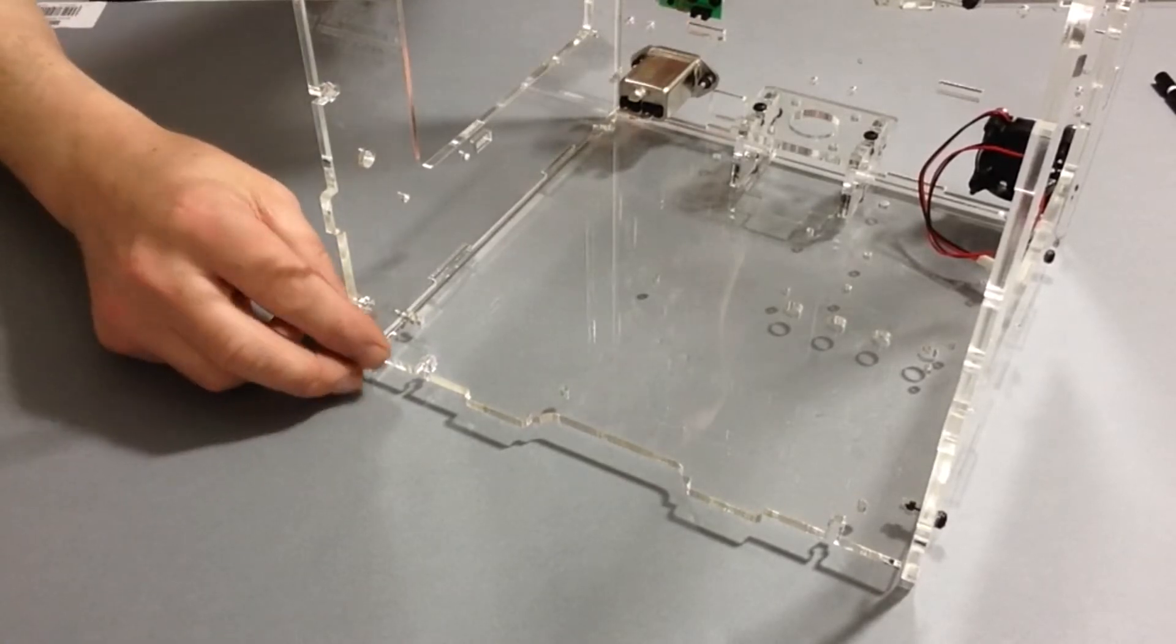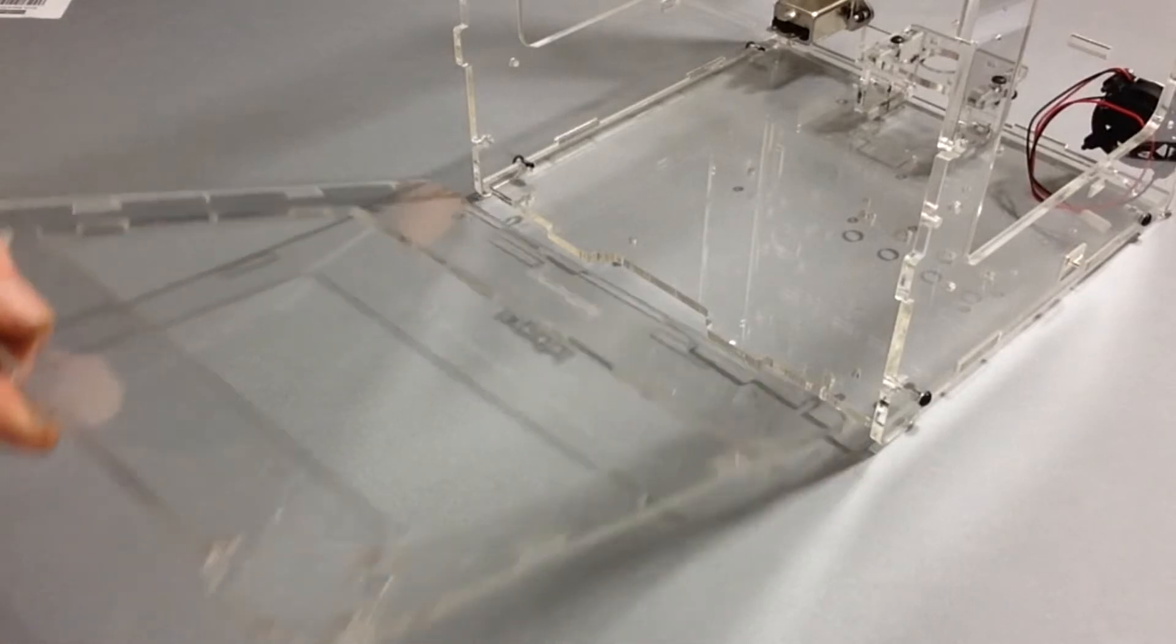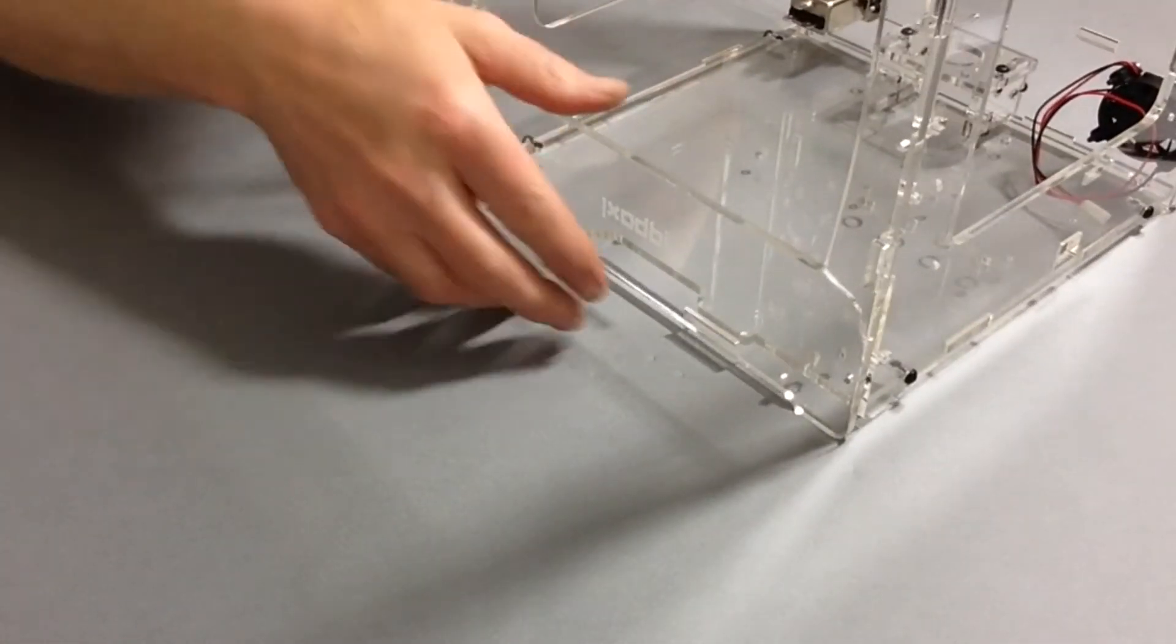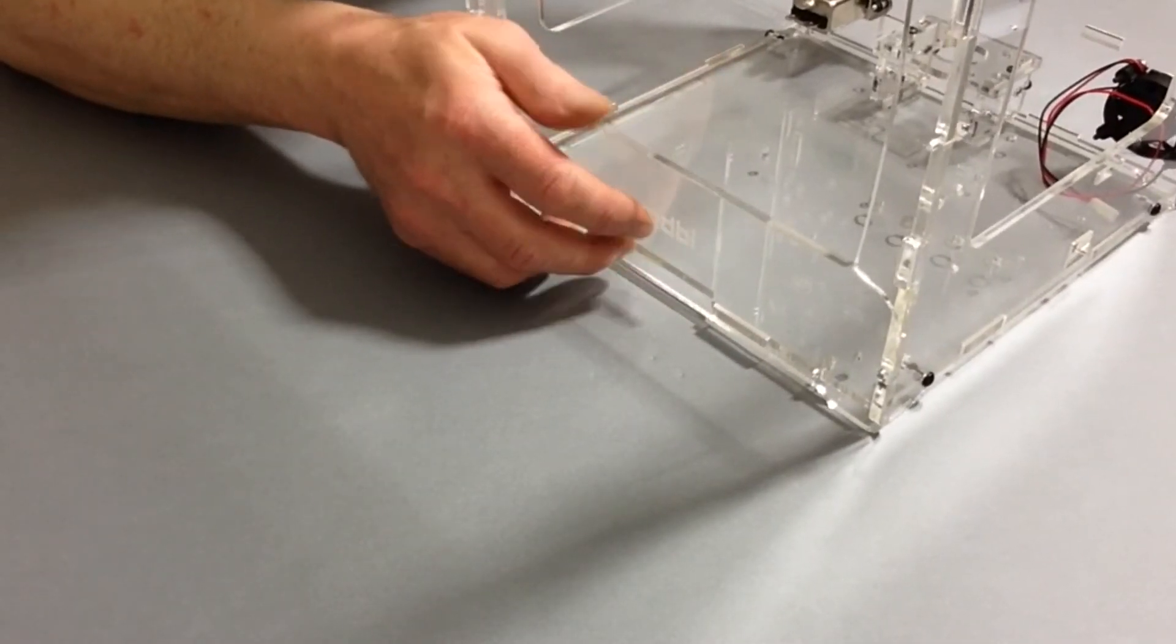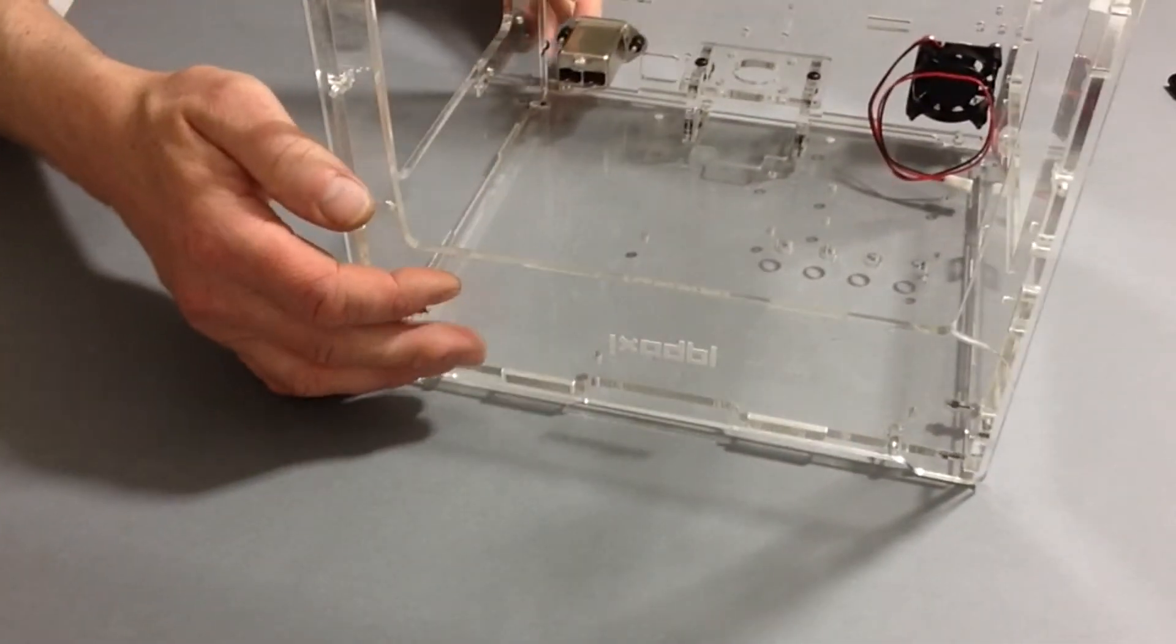Next, fit the right side panel as shown here. Next, we are going to be fitting the front so that the front with the ID box logo fits like so.